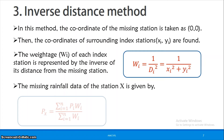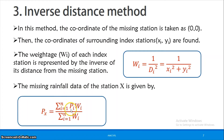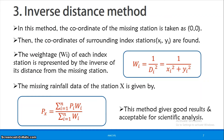The missing station precipitation is calculated as: Px = Σ(Pi × wi) / Σwi, that is, the sum of precipitation at each index station multiplied by its weightage, divided by the sum of all weightages. The inverse distance method is considered more accurate than the arithmetic mean method.